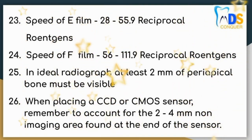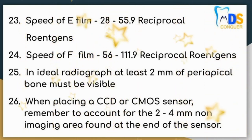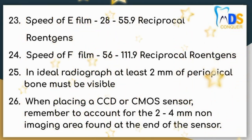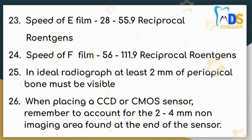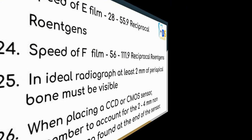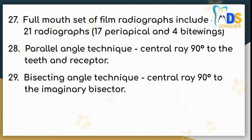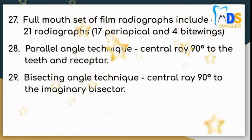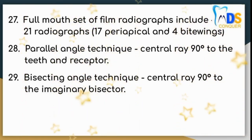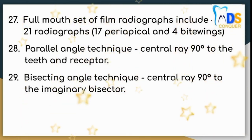Number 26: When placing a CCD or CMOS sensor, remember to account for the 2 to 4 mm non-imaging area found at the end of the sensor. Point number 27: Full mouth set of film radiographs includes 21 radiographs, in which 17 are periapical and 4 are bitewings.